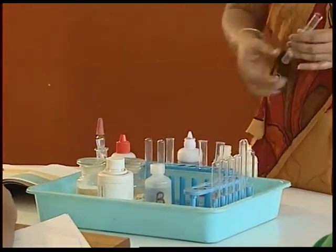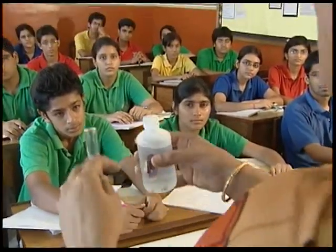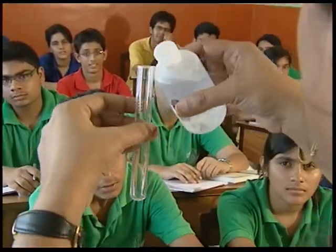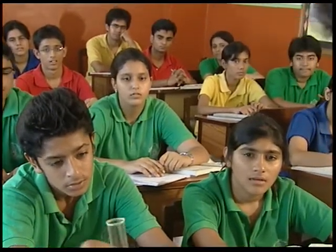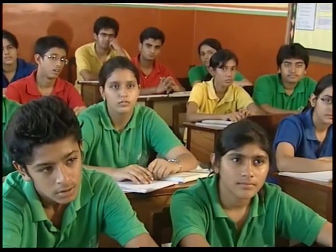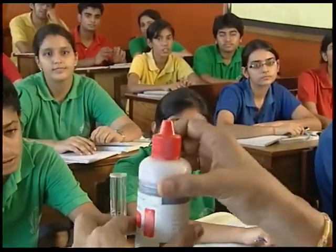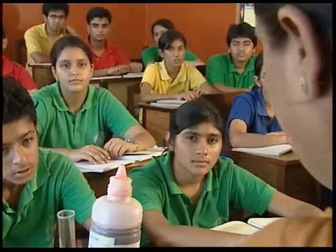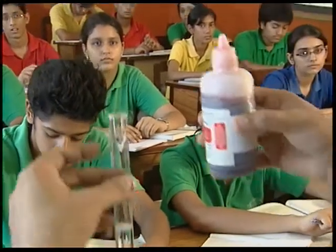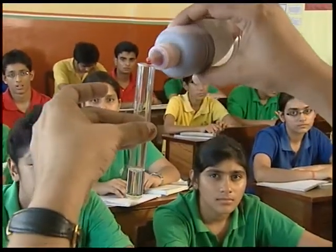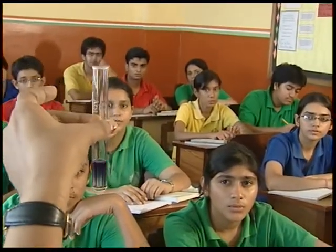Now doing the same test with Sample B — it's not necessarily the case that Sample B is a base. Let's put red litmus solution in it — red litmus is a natural indicator, obtained from lichens. When we pour it in, the color changes to blue. So Sample B is a base.